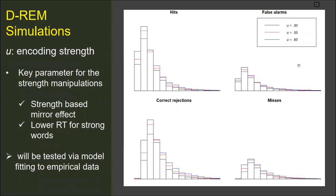The parameter u determines the probability of encoding to memory. Increasing u causes higher hit rates and lower false alarm rates together with faster responses. These indicate that the parameter u captures the effects of the strength manipulations. Yet, this should be further demonstrated with comparisons to empirical data, which will be done in the further stages of the study.